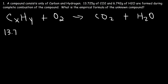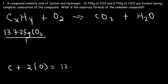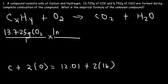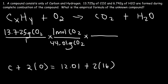Let's start with 13.725 grams of CO2 and convert it to moles. The molar mass of CO2 has one carbon atom and two oxygen atoms. Carbon has an atomic mass of 12.01 and oxygen is 16. Two times 16 is 32 plus 12, that's 44. So one mole of carbon dioxide has a mass of 44.01 grams. Every molecule of CO2 contains one carbon atom, so for each mole of CO2 there's one mole of carbon. The units grams of CO2 and moles of CO2 cancel, giving us moles of carbon.